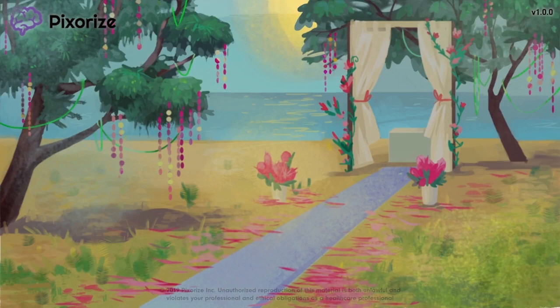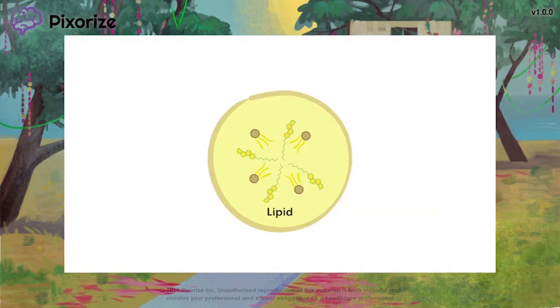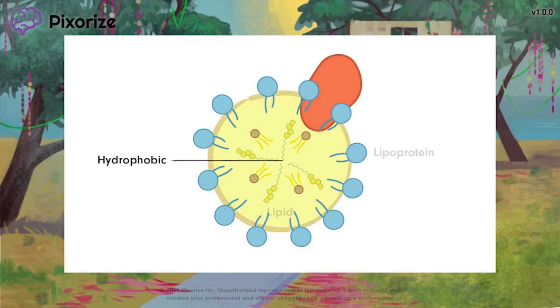We'll start with a conceptual overview. The blood is primarily composed of water, which means that lipids, which are hydrophobic, cannot dissolve in it. The body therefore needs an alternate way to transport lipids, and to accomplish this, the body uses lipoproteins. Lipoproteins are fat transport particles. They have a hydrophobic interior where they can store lipids, and a hydrophilic exterior, making them soluble in the blood.